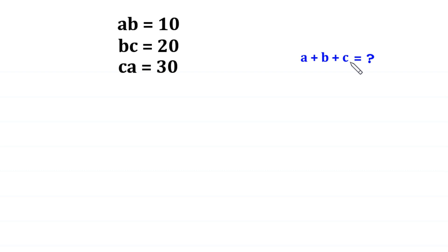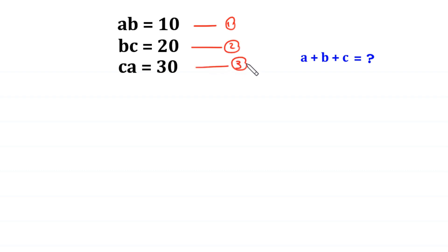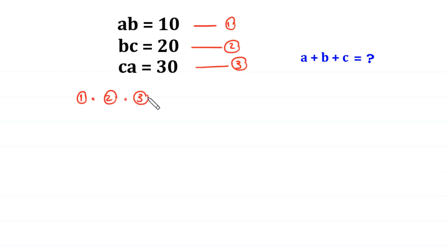So let us start. We name this equation 1, this equation 2, and this equation 3. Now we multiply all these three equations: equation 1 times equation 2 times equation 3.